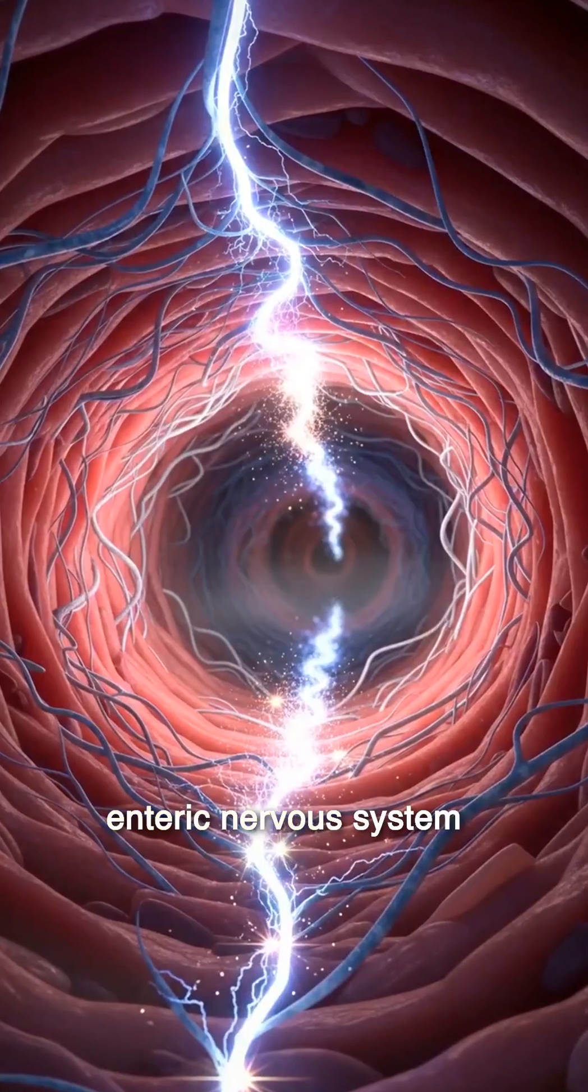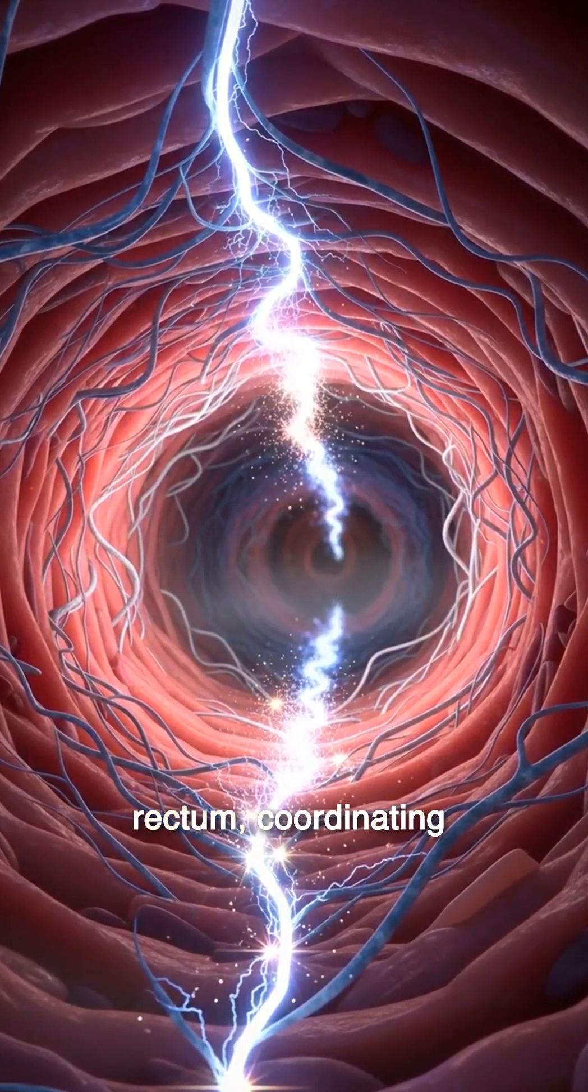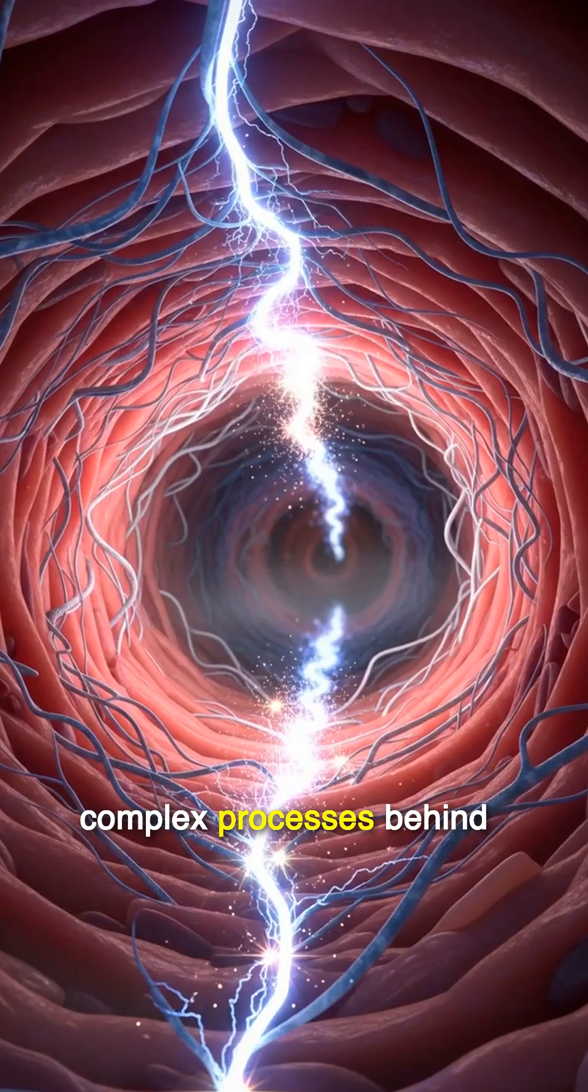This is the enteric nervous system, stretching from your esophagus to your rectum, coordinating complex processes behind the scenes.